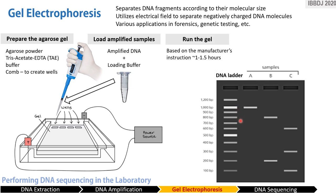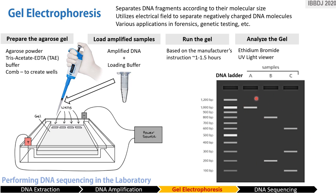Running the gel involves applying an electrical gradient such that one end has a positive charge and the other has a negative charge. Because DNA and RNA are negatively charged molecules, they are pulled toward the positively charged end of the gel. Visualization is done traditionally with ethidium bromide and viewing under UV light, producing bands which are separated genetic material. Note that ethidium bromide is a carcinogenic compound, so proper and careful handling must be observed.